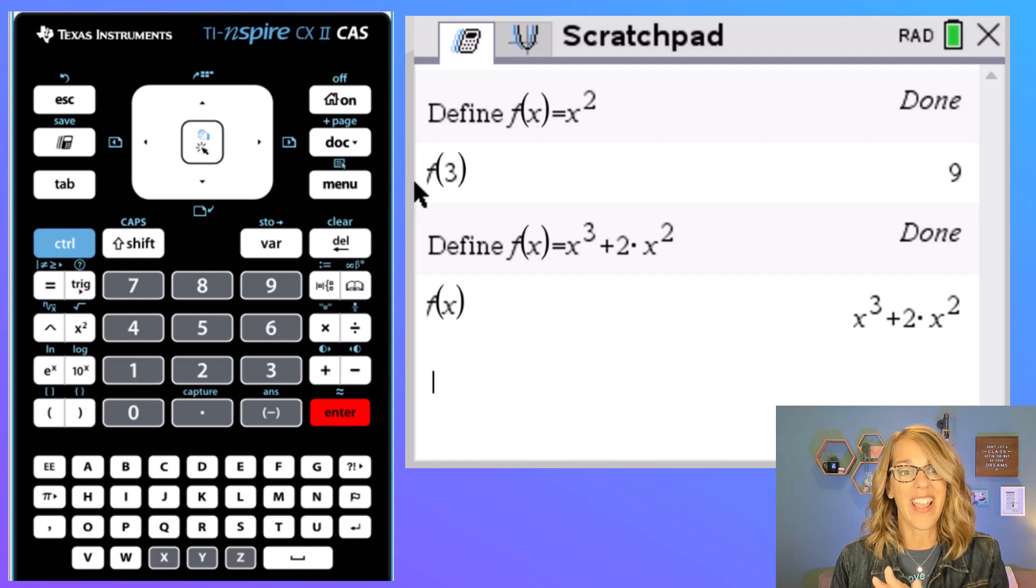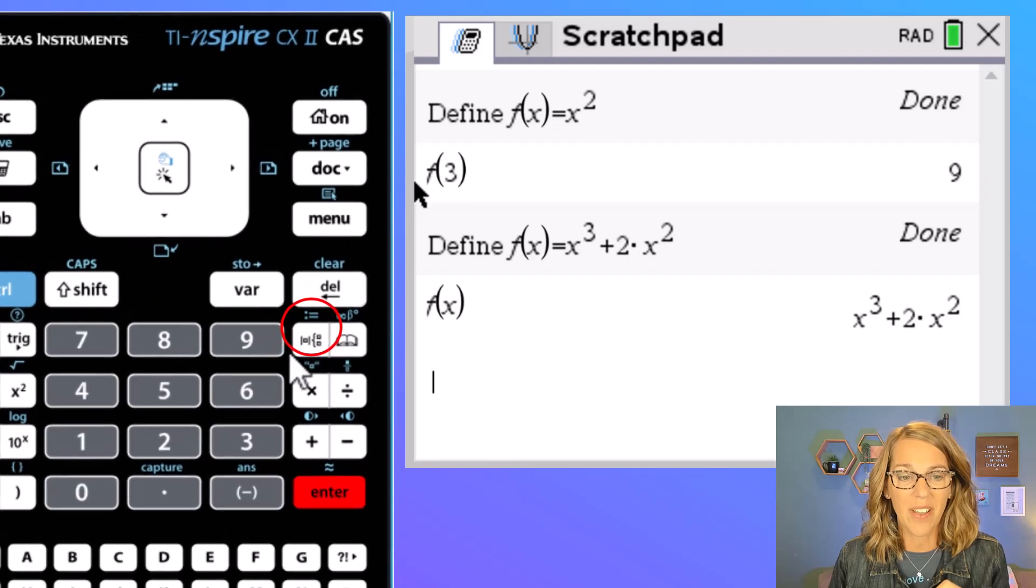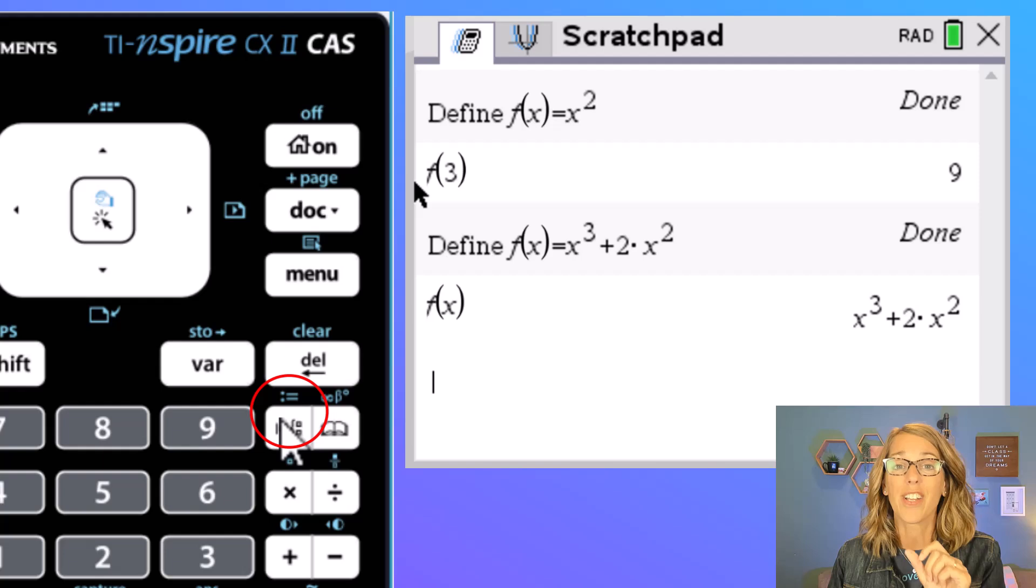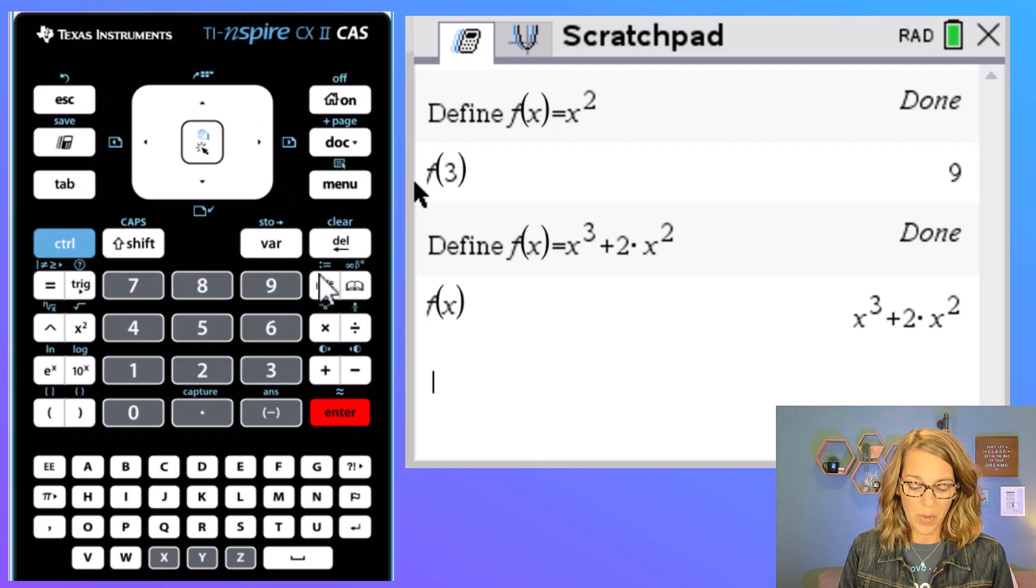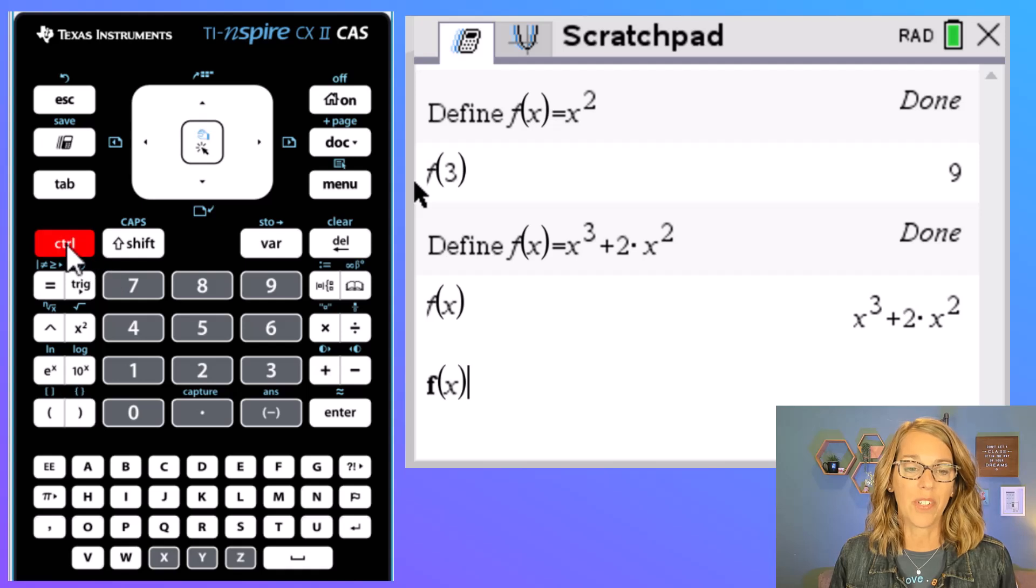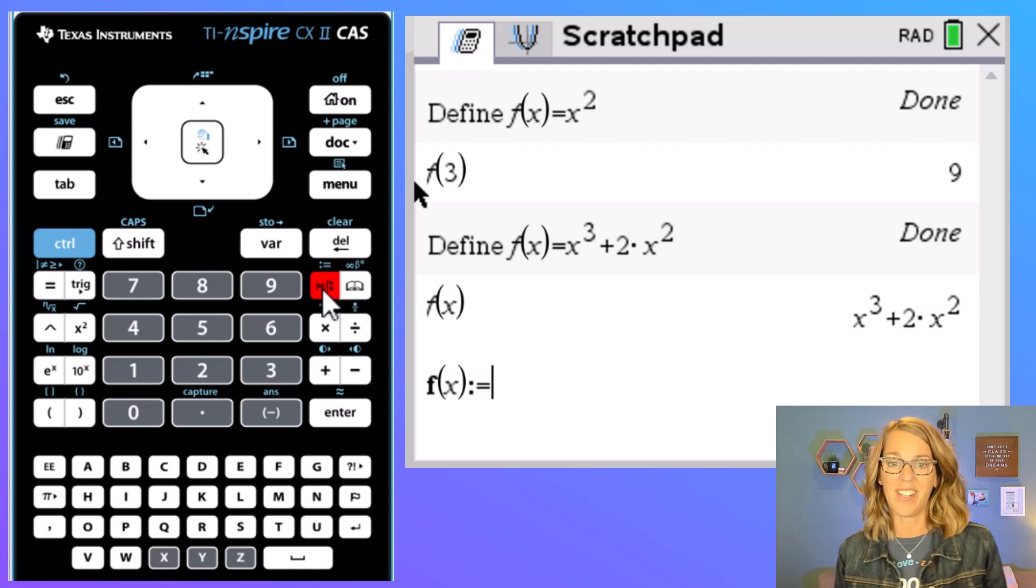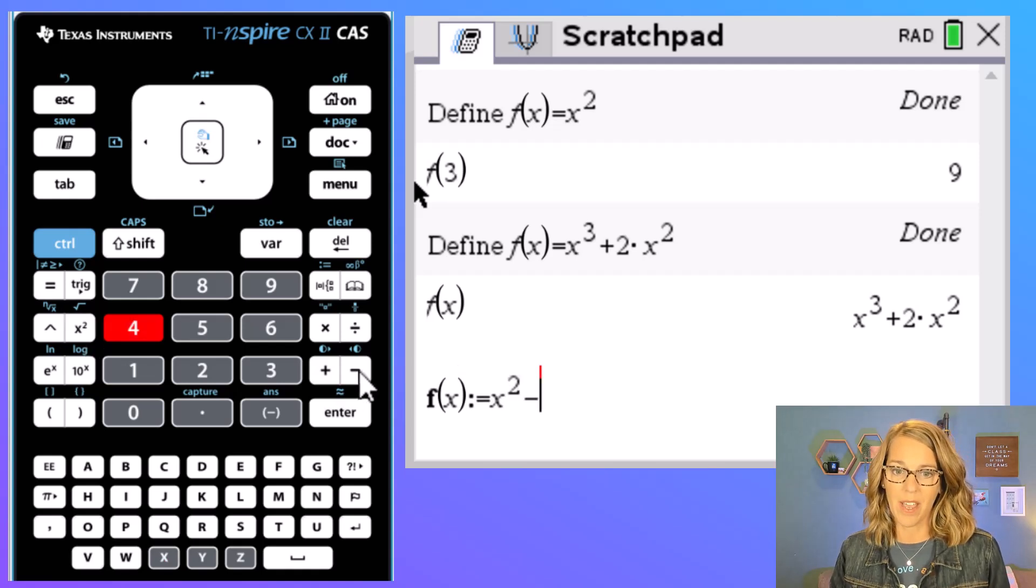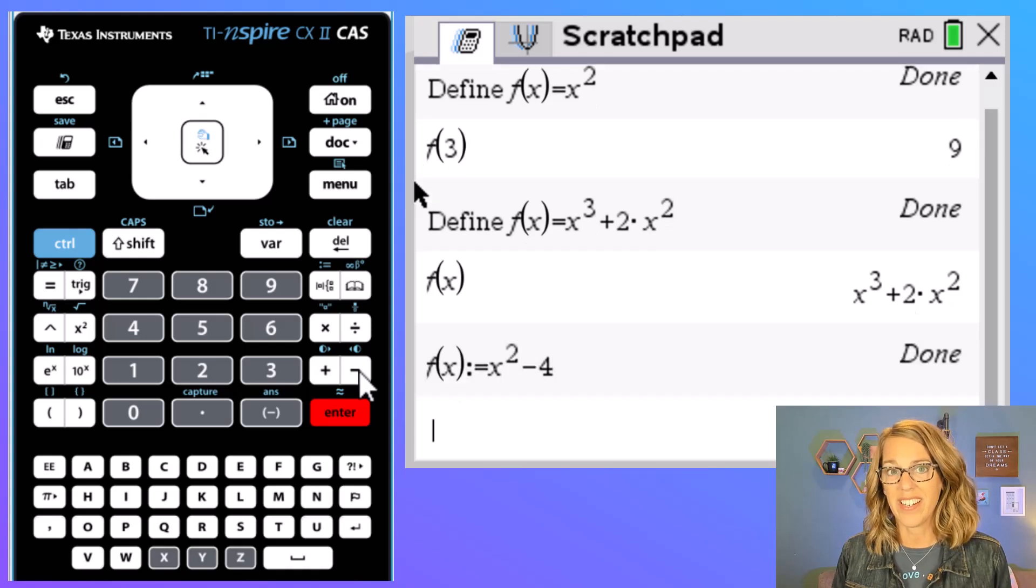Now there's a third way and the third way uses the colon equals. That colon equals is over here on your keypad right next to the number 9. We're going to need our control button to do that. So we type in f of x and then I'm going to use colon equals, so control followed by that colon equals button. This also means define. This time let's go ahead and do x squared. So I'm going to do x squared and then minus 4 and then we hit done.